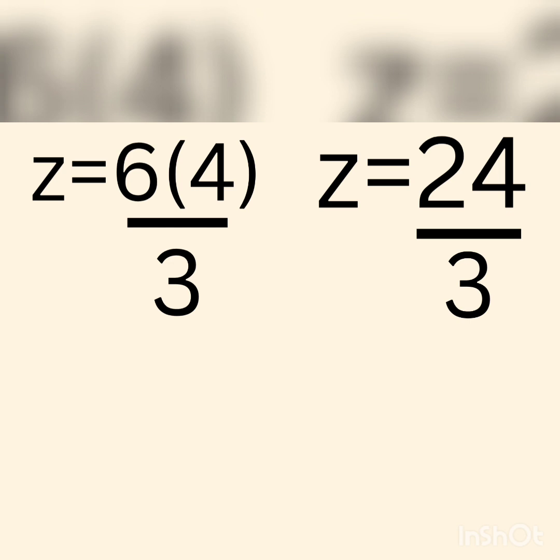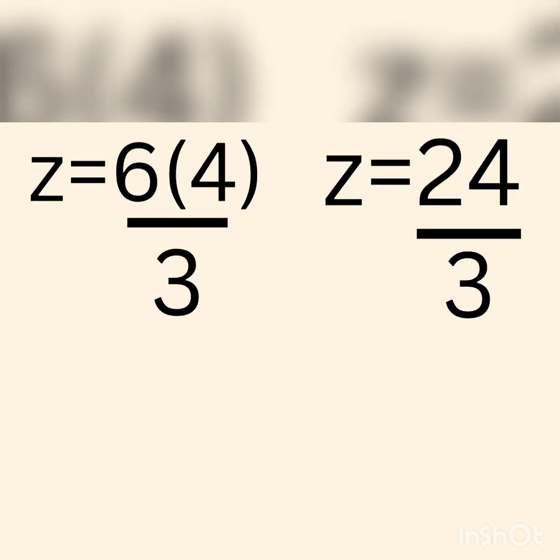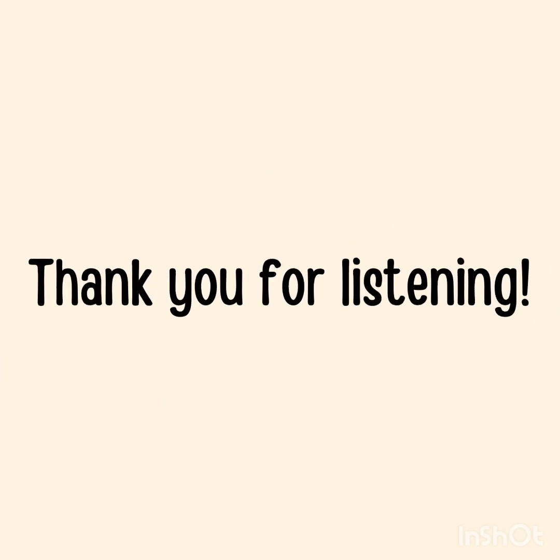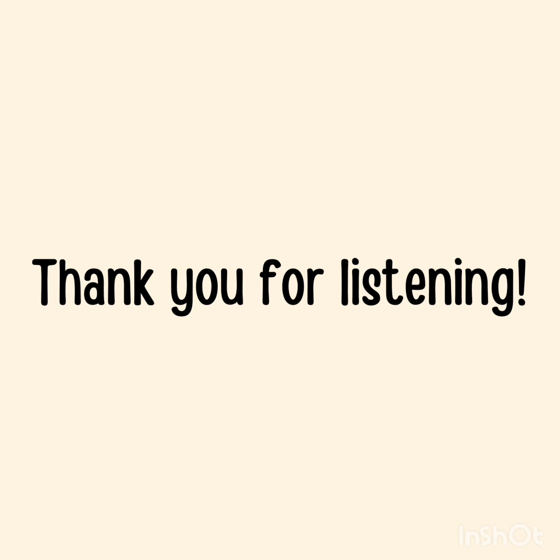Now, 6 times 4 equals 24 over 3, and 24 divided by 3 equals 8. Therefore, the value of z is 8, and that's our final answer. It's very simple and very easy to understand. That's all for today. Thank you for listening and have a nice day.